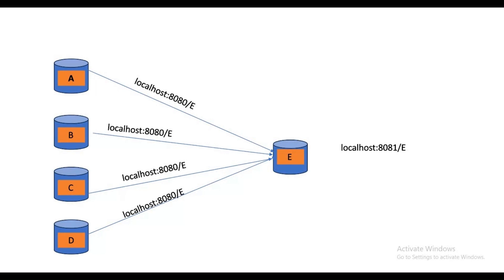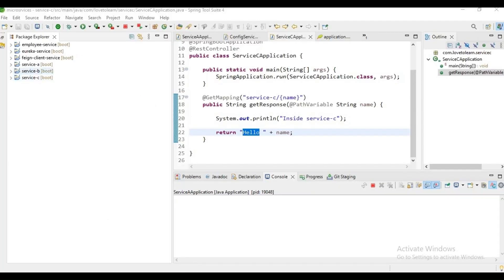Eureka Server is an application that holds information about all the client service applications. Every microservice will register into Eureka Server, and Eureka Server knows all the client service applications running on each port and IP address. This Eureka Server is also known as the discovery server.